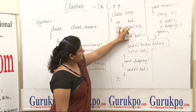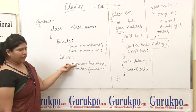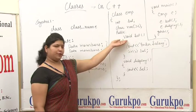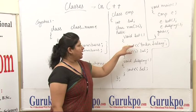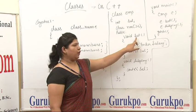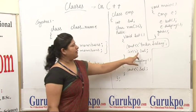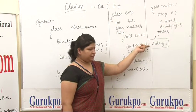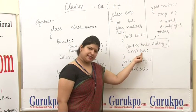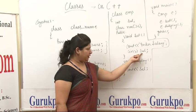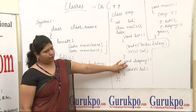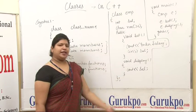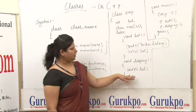Under the public scope, we define member functions that will be called by objects of the same class. First is the function 'void set', in which we set the value of salary — the user enters a salary value and it is stored in the 'sal' variable. Second is the display function, which will display the salary.